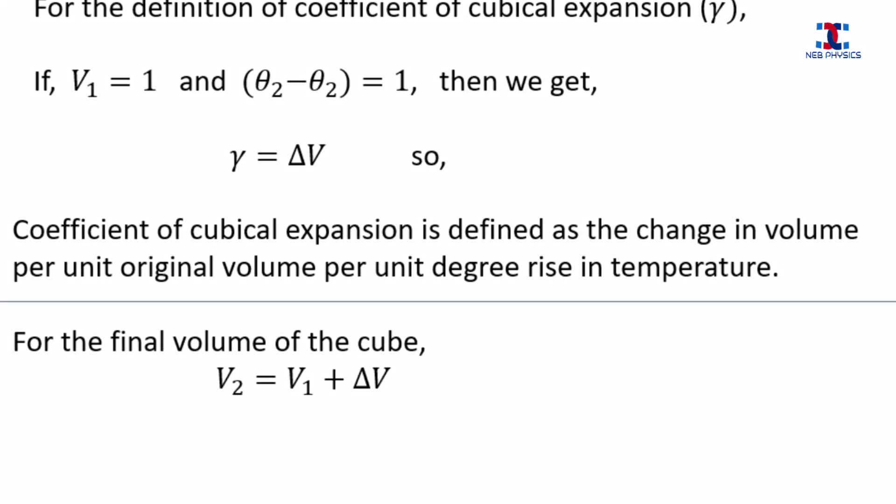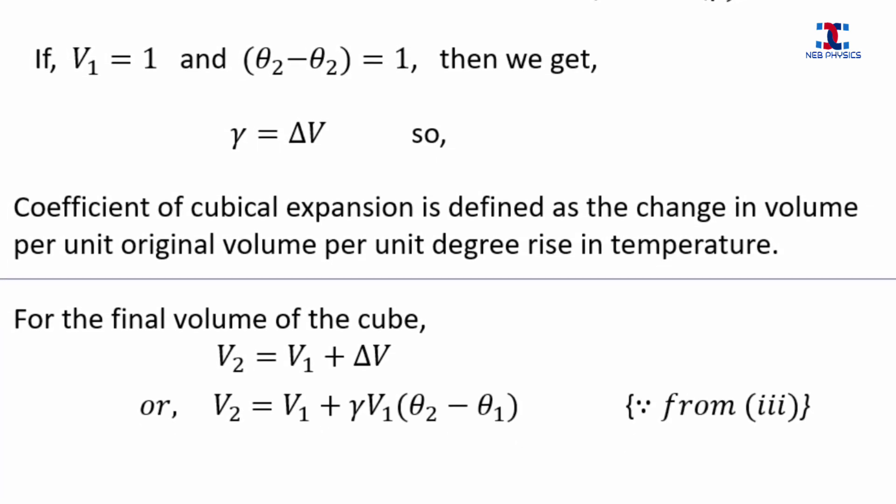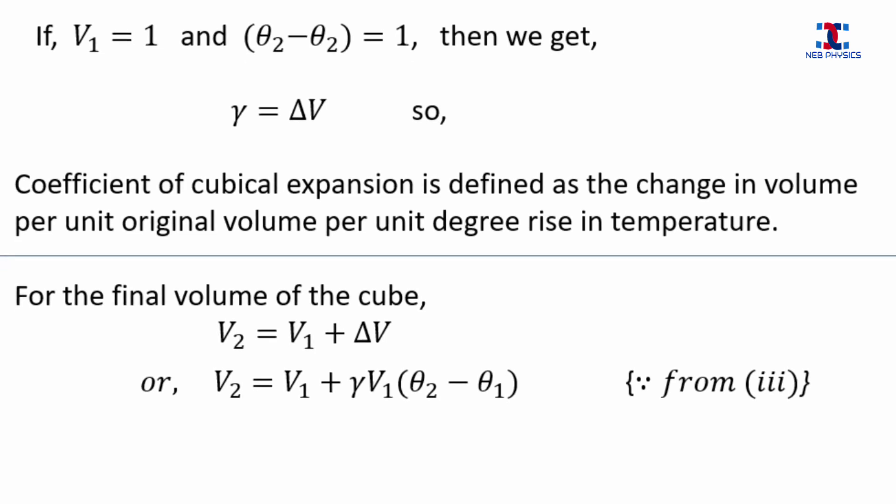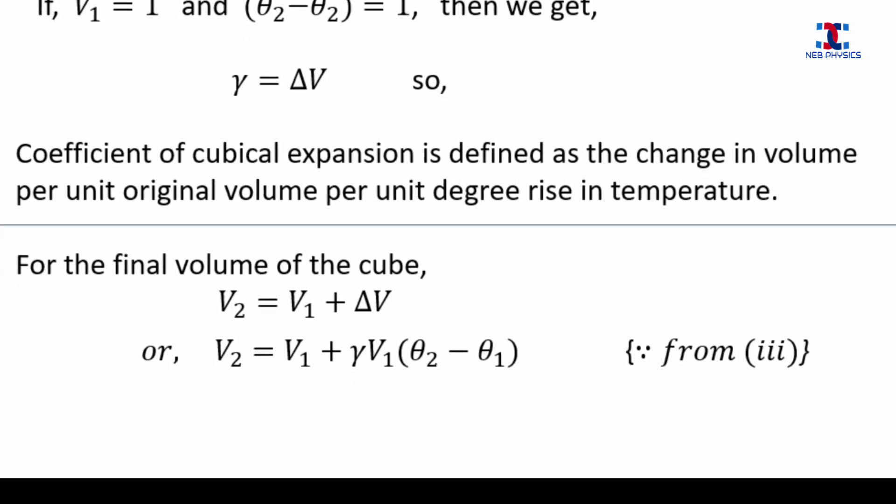Here, when we substitute the value of Delta V from equation 3, then we get V2 is equal to V1 plus Gamma V1 times Theta 2 minus Theta 1.